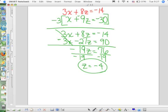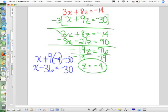I'm scared to touch the board now. x plus 9 times negative 4 equals negative 30. x minus 36 equals negative 30. Add 36 to both sides. x is 6.